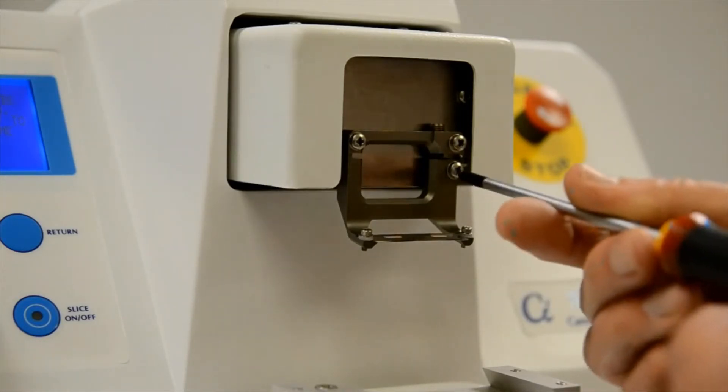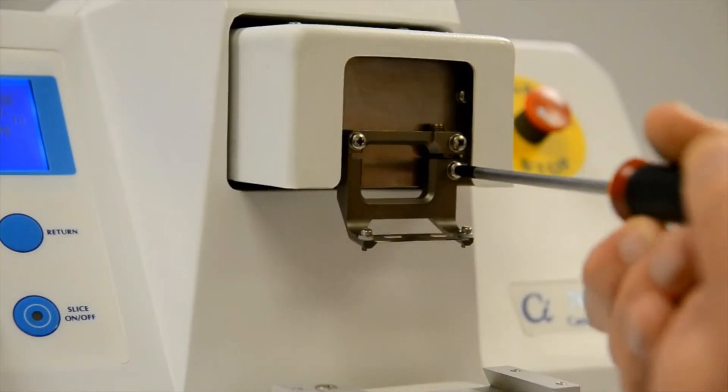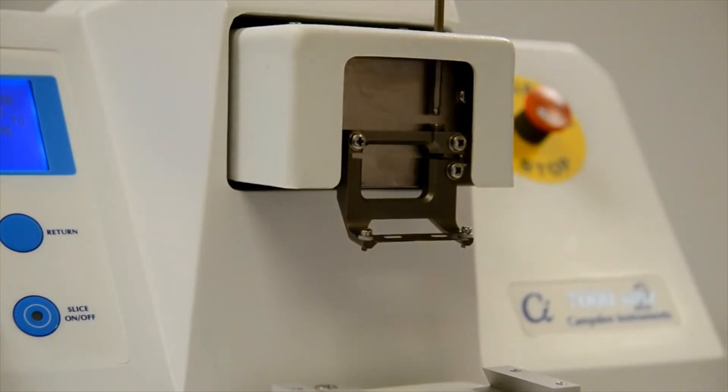So if you loosen the lower screw, the one on the right hand side of the blade holder, you will be able to use a hexagonal key to turn the differential screw and change the slot width.